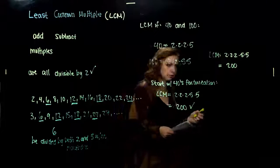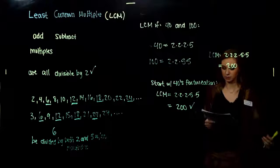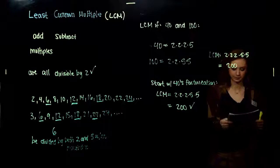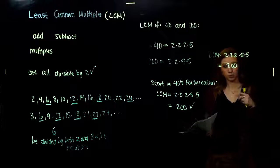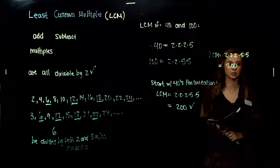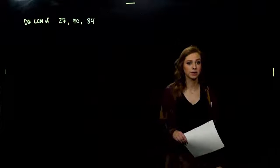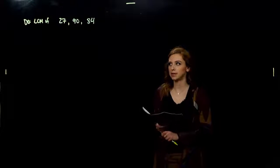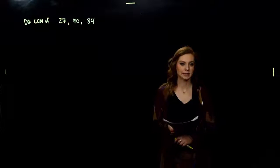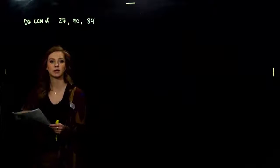We always ask that question: what is this one missing that the other one has? What do I need to build further? Whichever method you're more comfortable with, you can use. I'm going to stick with building — it will help when you start adding and subtracting expressions, not just numbers. So the next example: find the least common multiple of 27, 90, and 84.